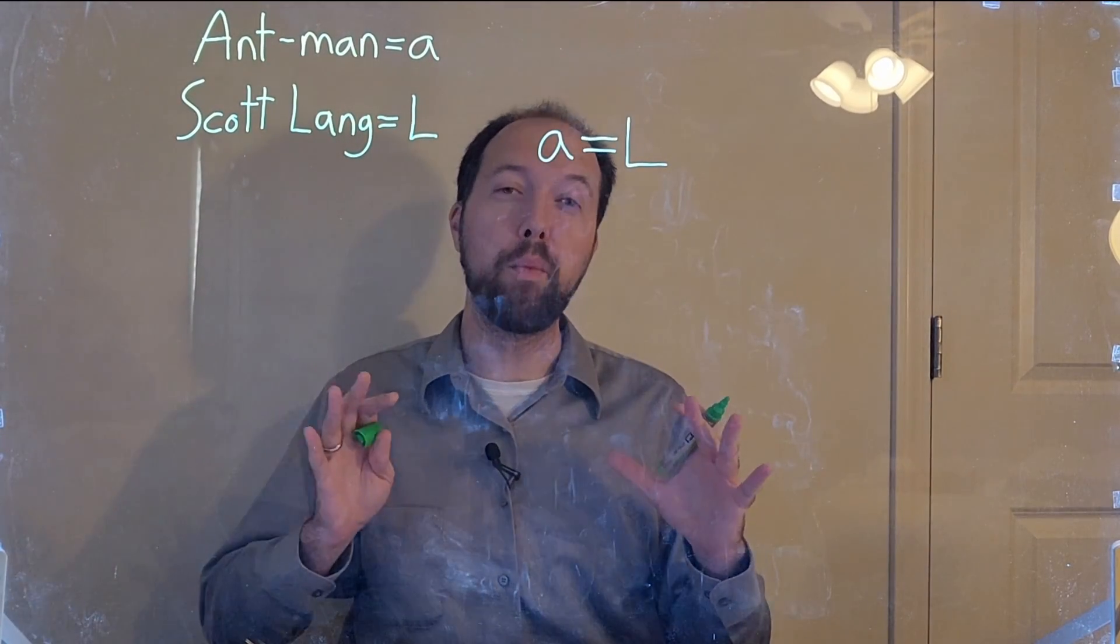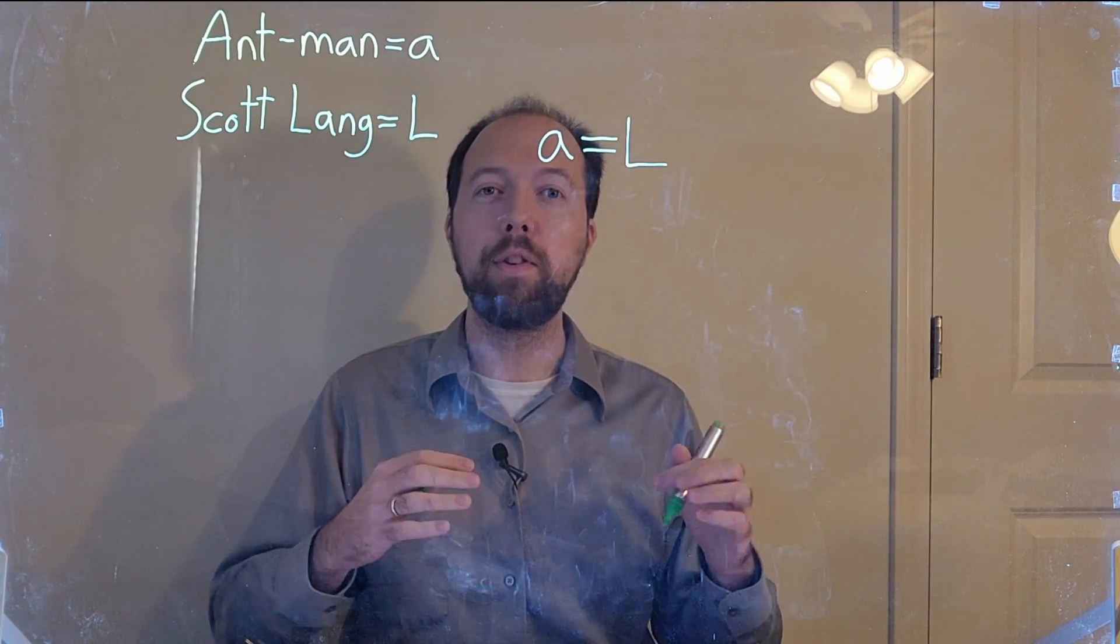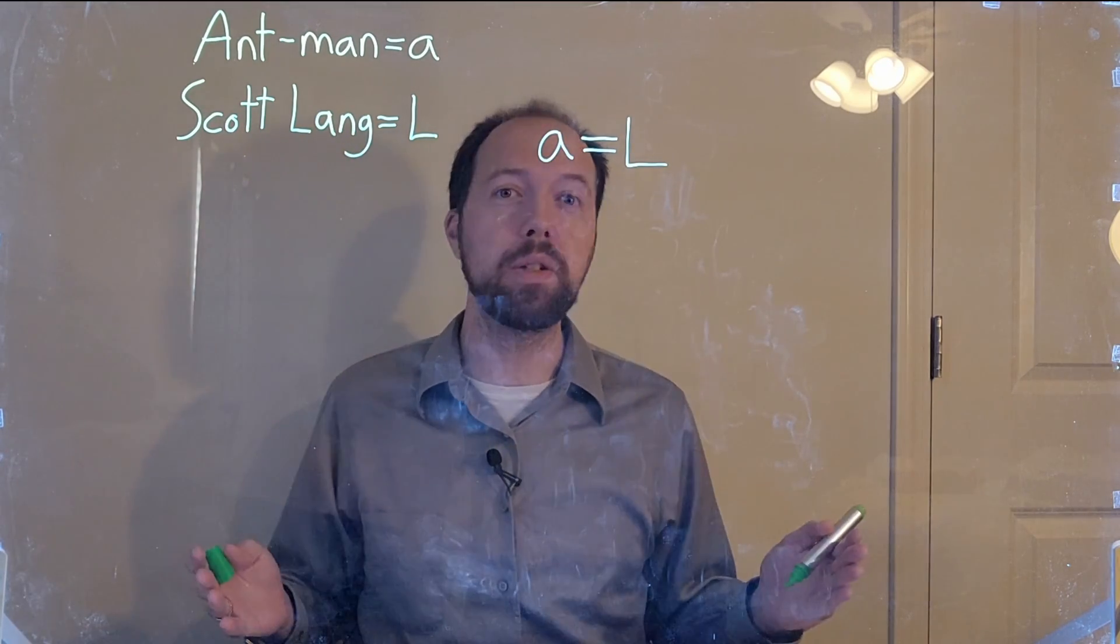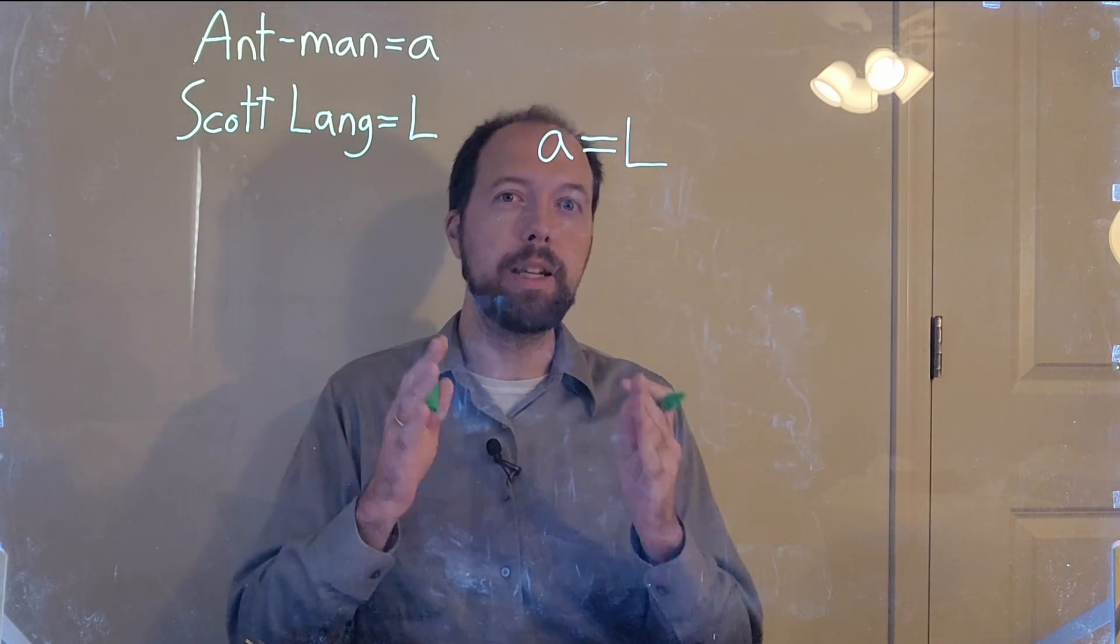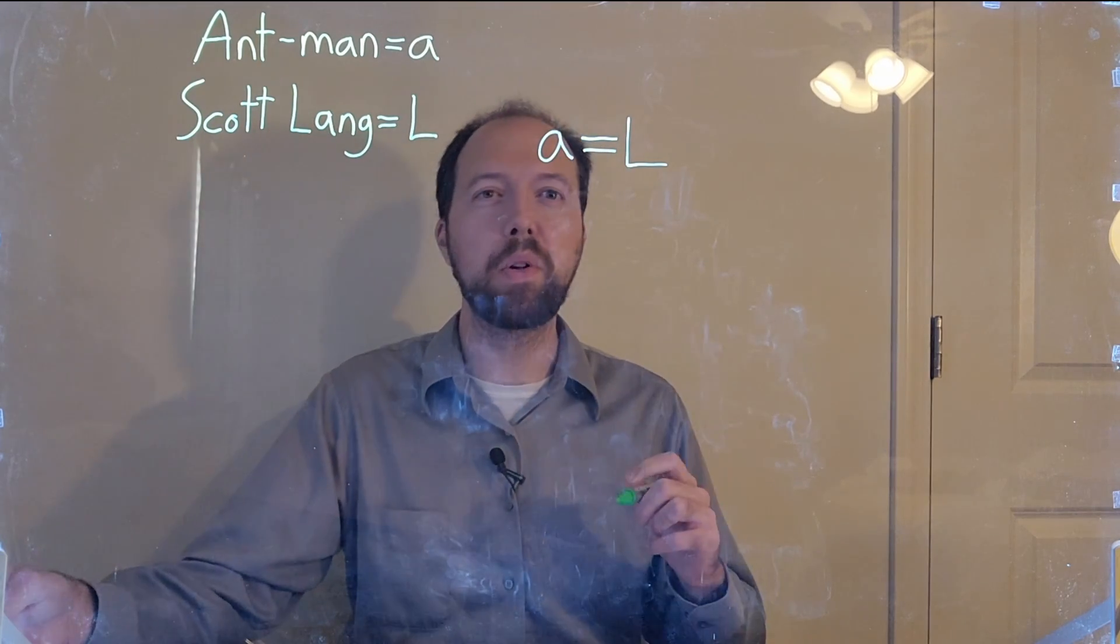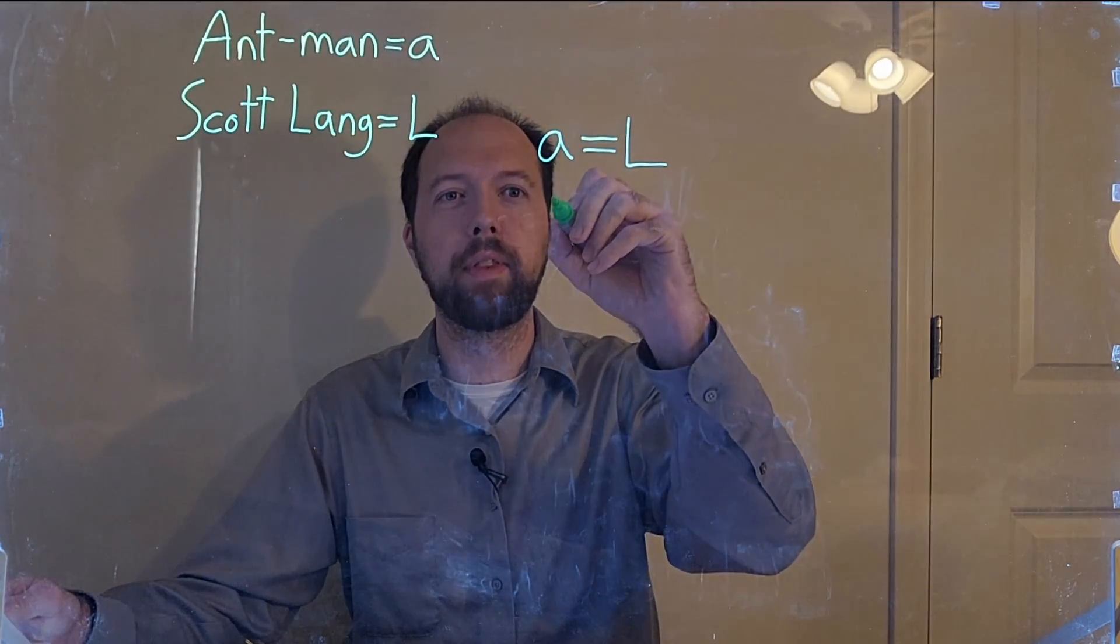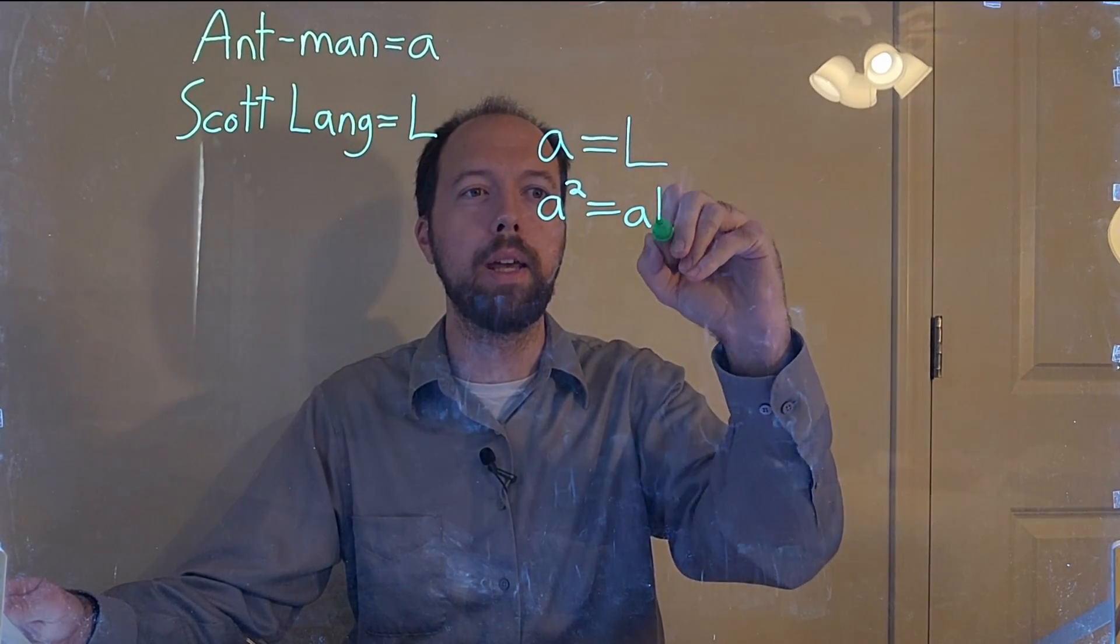Now when you're doing an equation in math, if you have two sides that are equal, if you do the same thing to both sides of it, the equation stands. It still remains equal. So as long as we do the same thing to both sides of the equation, it should hold up. So the first thing we're going to do, we're going to multiply both sides by A. Gives us A squared is equal to AL.